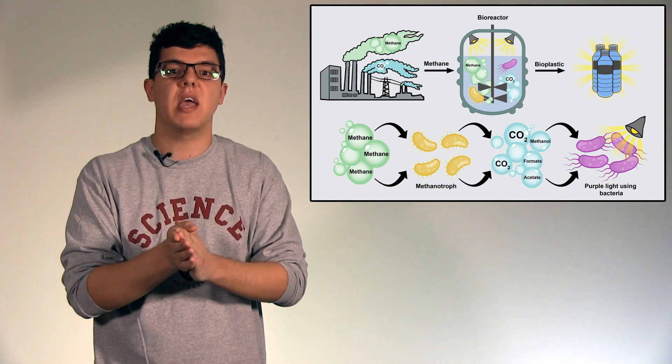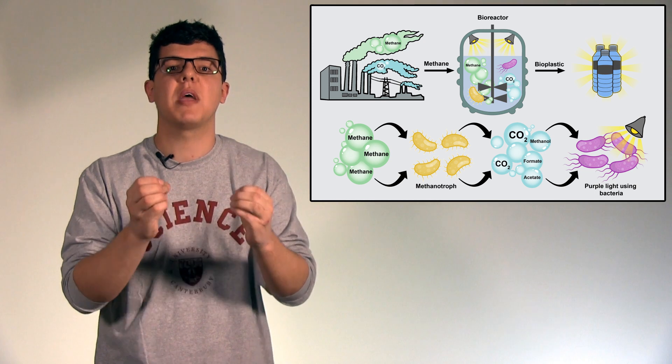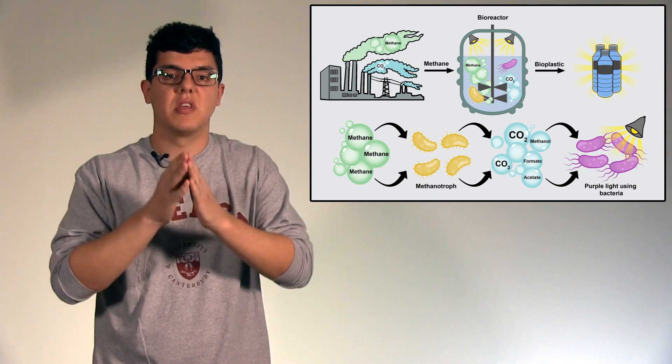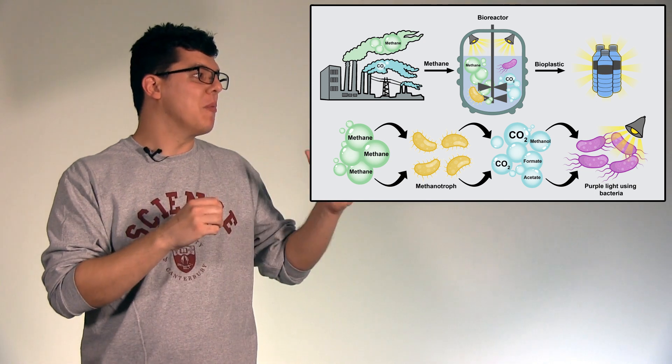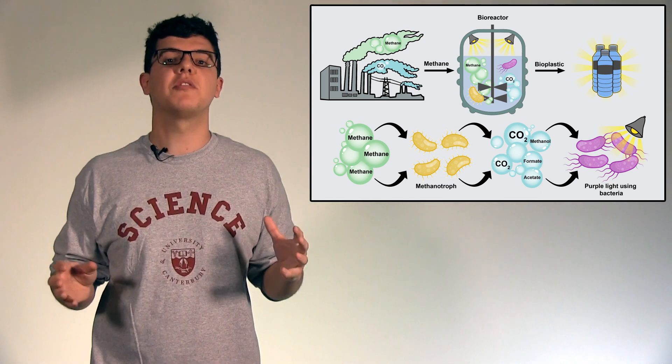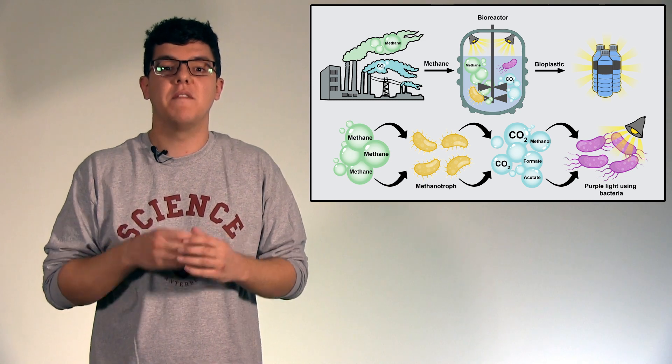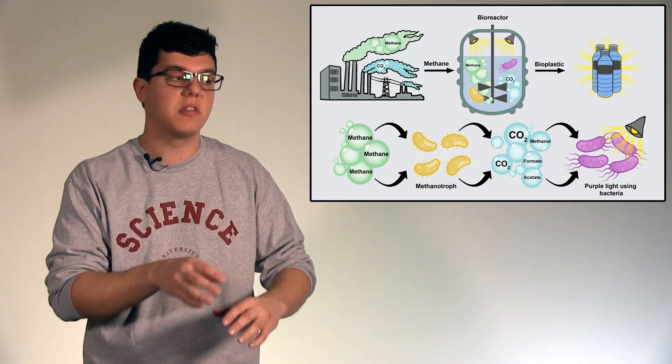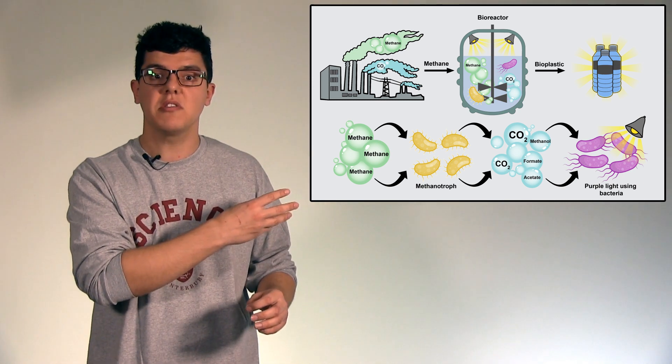It's still a potent greenhouse gas, and this is where the next bacteria of my research enters the field: the purple light using bacterium. Purple light using bacteria are incredibly versatile with what they can eat. In fact they can eat all the things that the methanotroph releases, including the CO2.